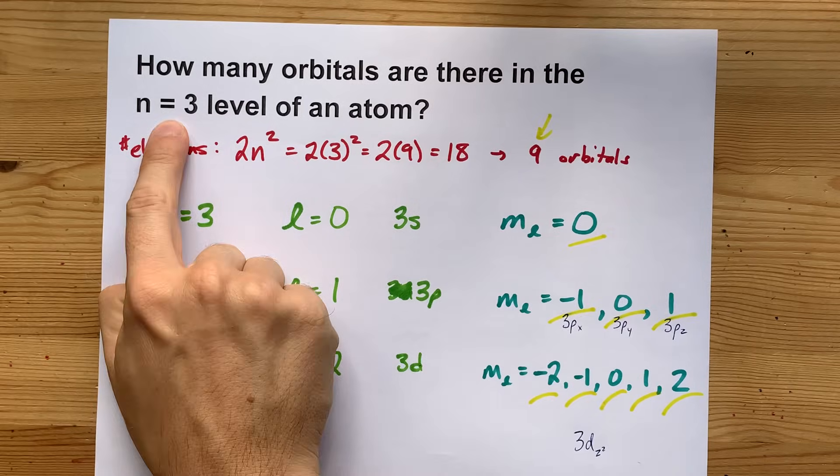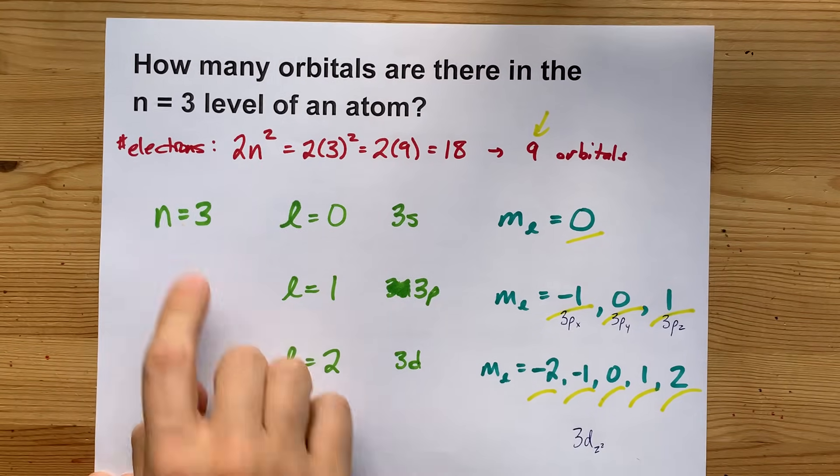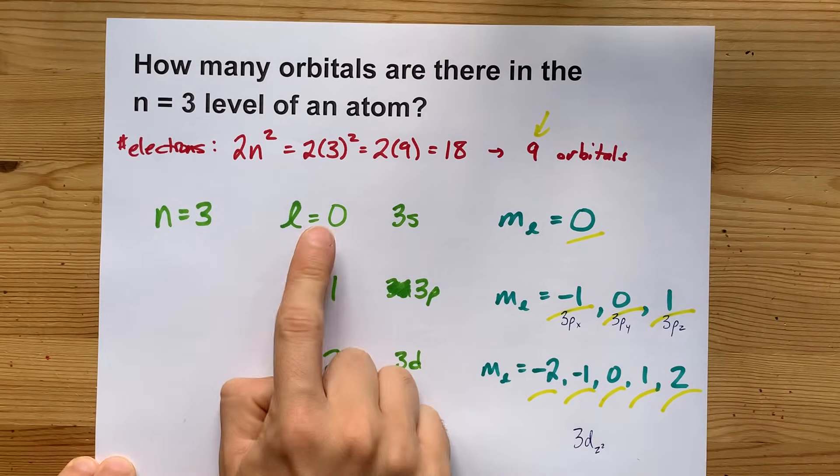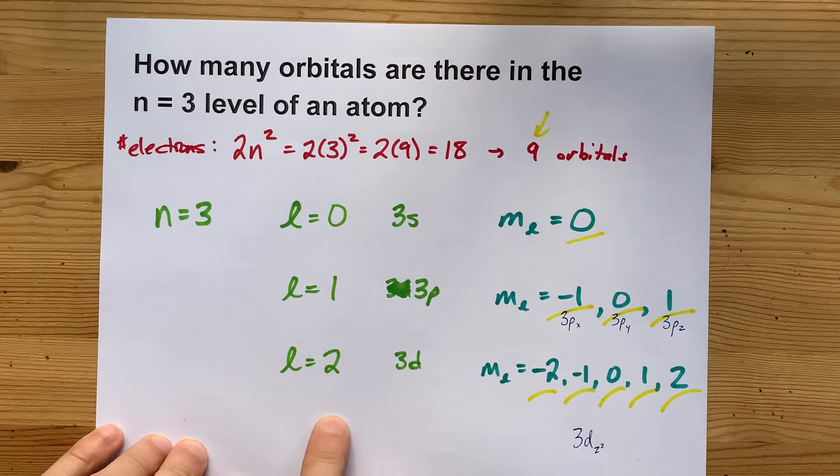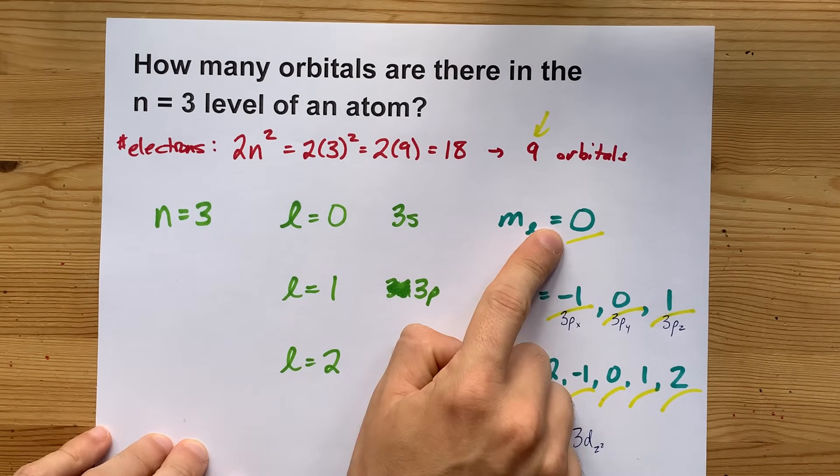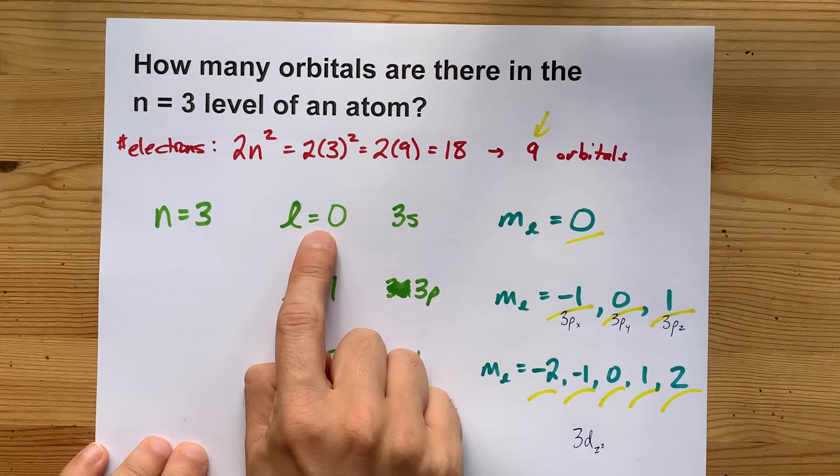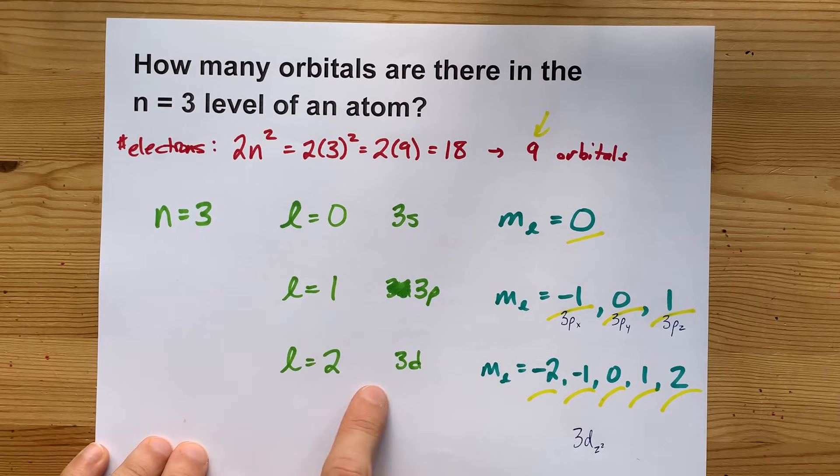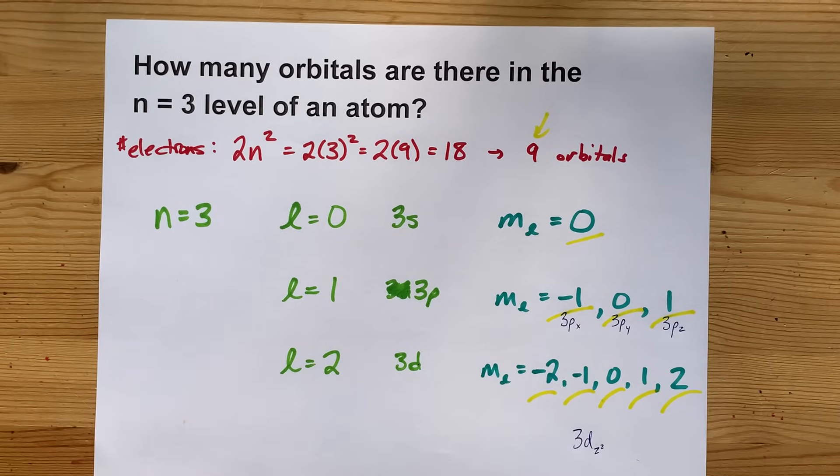How many orbitals are there in any level of an atom? Start with your N. Count your Ls from 0 up to 1 less than that. And then count MLs from each negative L to positive L. You'll have to do it separately for each of the L values that you have.